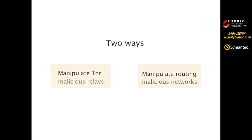There are two ways. The first way is manipulating Tor — by running malicious relays or compromising other Tor relays in order to observe the Tor traffic. Or instead of controlling a relay, adversaries can manipulate internet routing to put themselves onto the path at both ends of the communication, which will be the focus of this talk.